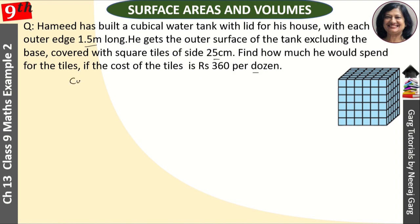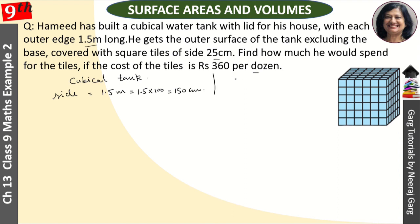So this is our cubical tank and this side is 1.5 meters. If we change it to cm, we multiply 1.5 by 100, and this gives us 150 cm. So this is the square tile, and its side is 25 cm.